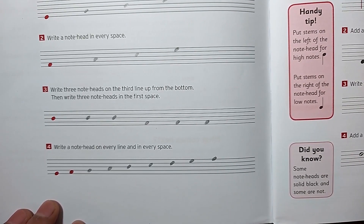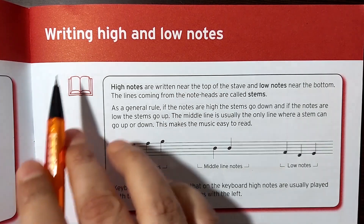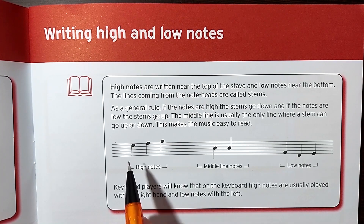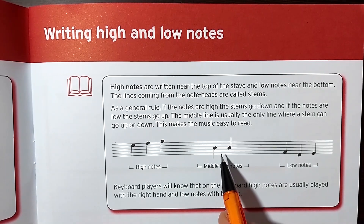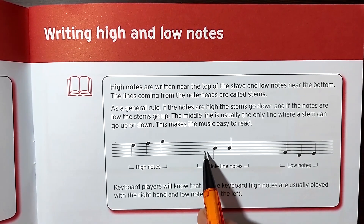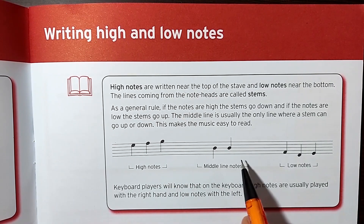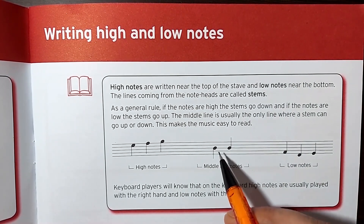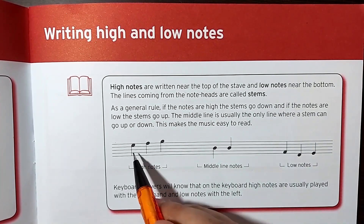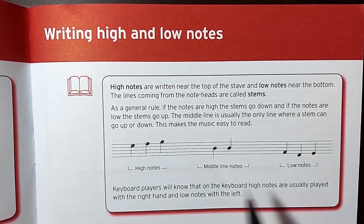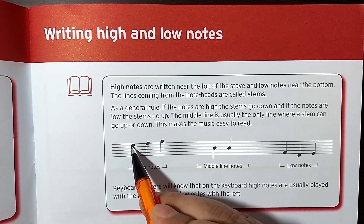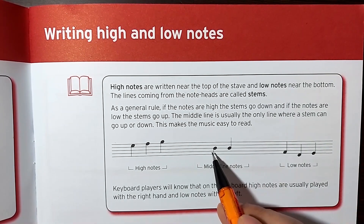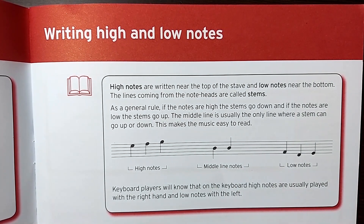Now let's move to the next topic: writing high and low notes. We should know which note is high and which is low. The five lines are the stave, and the center line is the middle. All notes above this middle line are called high notes, and all notes placed below this middle line are called low notes. The lines attached to notes are called stems. On high notes the stem should always be on the left side going down, on low notes on the right side going up, and on middle notes you can put it either side — both are correct.